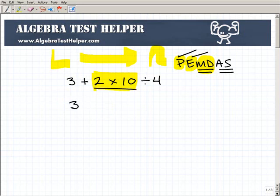So this would be 3 plus, this isn't going to change, but this is going to change my multiplication. So 2 times 10 is 20 divided by 4.